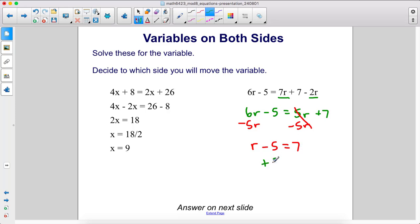Last step: we're going to add 5 to both sides, and that's going to give us r equals 12.